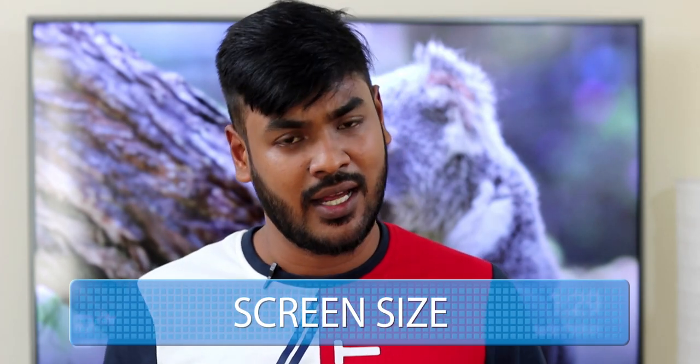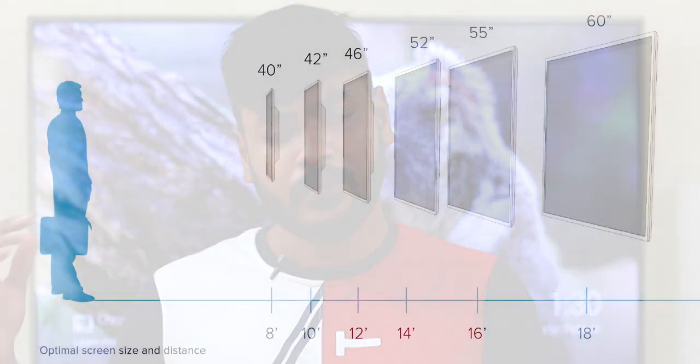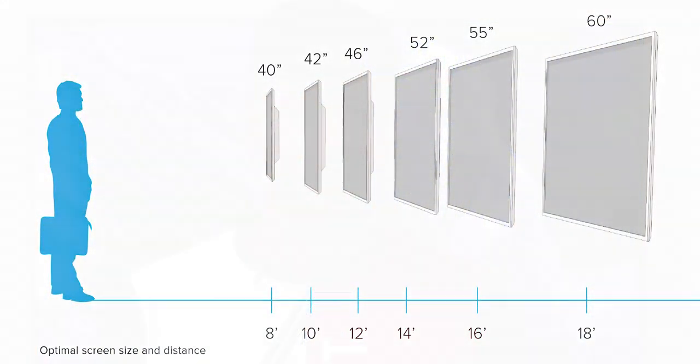The next consideration is screen size. For a bedroom, you should look at the appropriate screen size. For a dining hall, a minimum of 43 inches is recommended. Choose your screen size based on the room you plan to use it in.